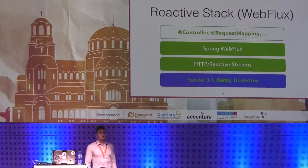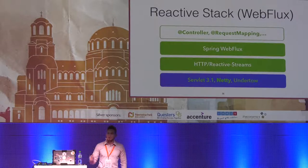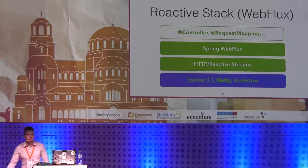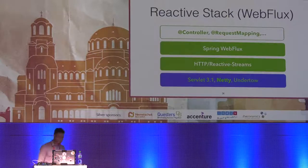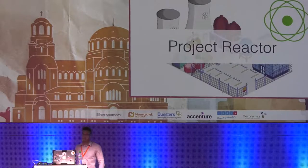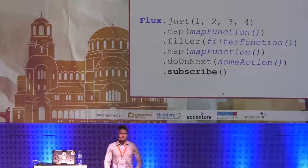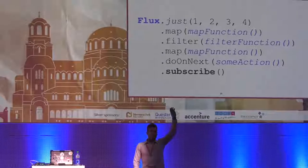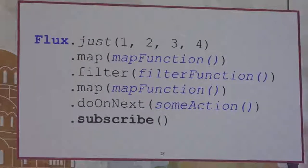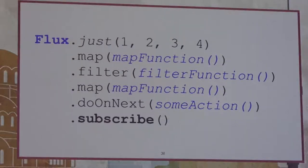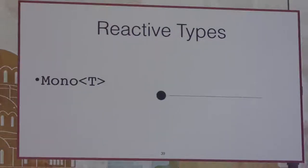The core of Spring WebFlux is Project Reactor. If you know Java 8 Stream API, you will be able to read Reactor code and build similar things. There are two reactive types you must know: Mono — which allows processing one or zero elements asynchronously and non-blockingly — and Flux — which allows processing an unlimited, potentially infinite stream of elements asynchronously and non-blockingly.